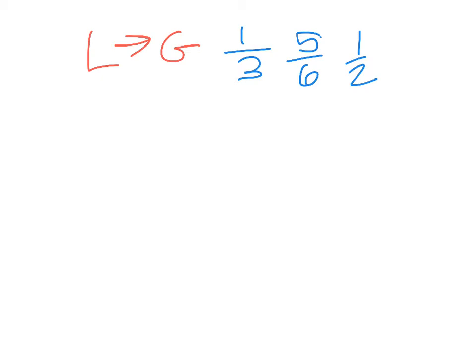So, in this case, we have one-third, five-sixths, and one-half. What we'll need to do, just like in comparing fractions, is we'll need to find the least common multiple of all three numbers.